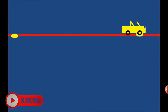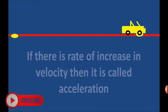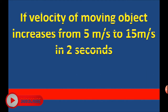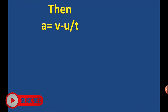When the velocity of a moving object increases, or if there is a rate of increase in velocity, it is called acceleration. For example, if velocity increases from 5 m/s to 15 m/s in 2 seconds, then a = (v - u) / t = (15 - 5) / 2 = 5 meter per second square.